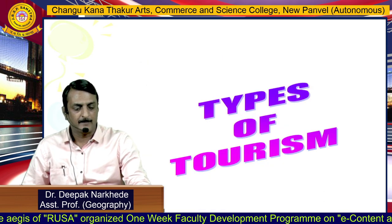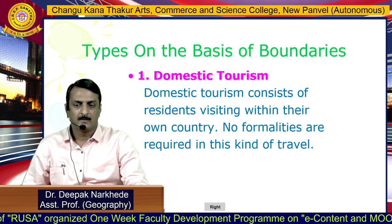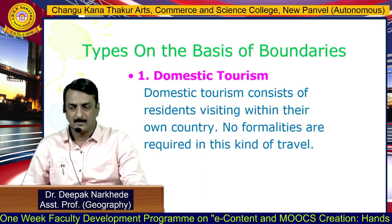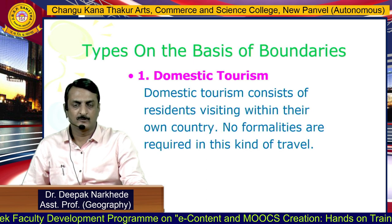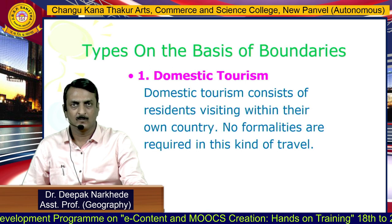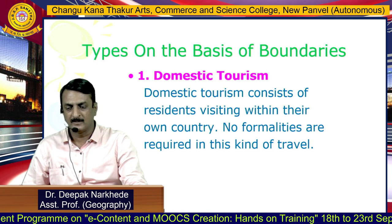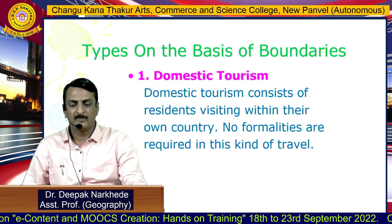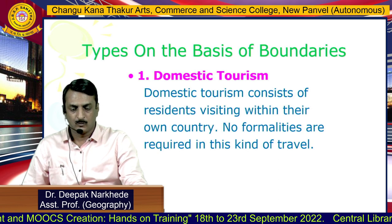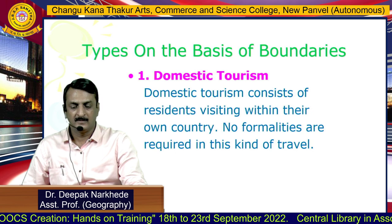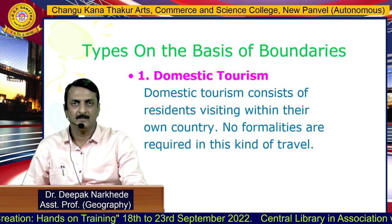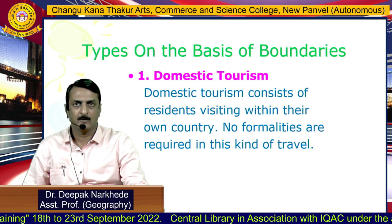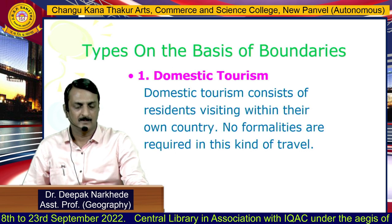Moving to the types of tourism, they can be classified in different categories. On the basis of boundaries, there are three categories. First is domestic tourism, which consists of residents visiting within their own country. No formalities are required in this kind of travel. For example, a person from India visiting Punjab, Kanyakumari, or Kerala can be considered domestic tourism.